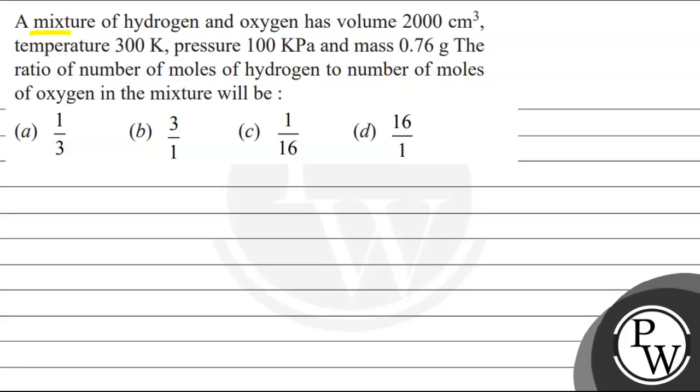Hello, let's read this question. A mixture of hydrogen and oxygen has volume 2000 centimeter cube at temperature 300 Kelvin, pressure 100 kilopascal and mass 0.76 gram. The ratio of number of moles of hydrogen to number of moles of oxygen in the mixture will be: 1 by 3, 3 by 1, 1 by 16, or 16 by 1. We have to choose the correct option.